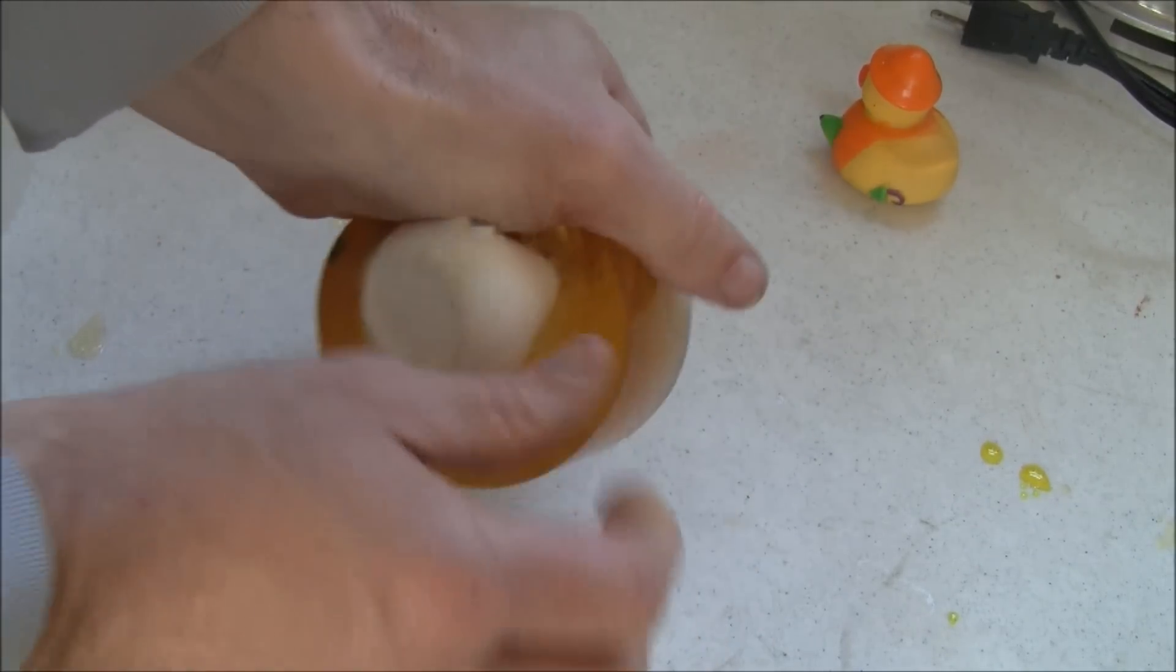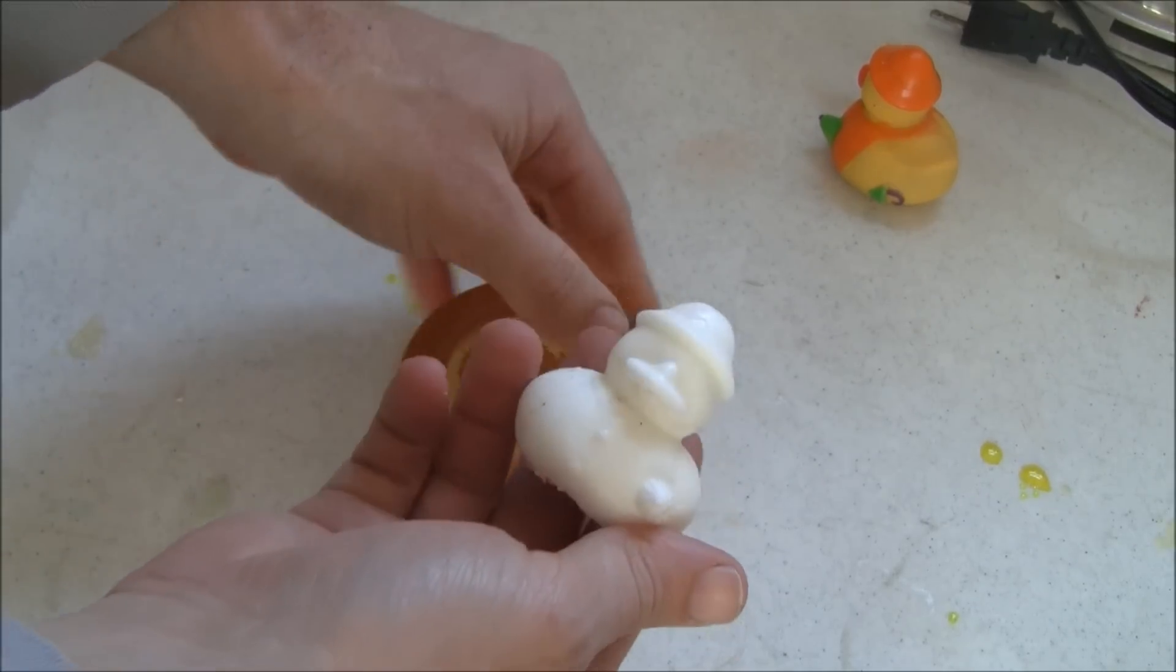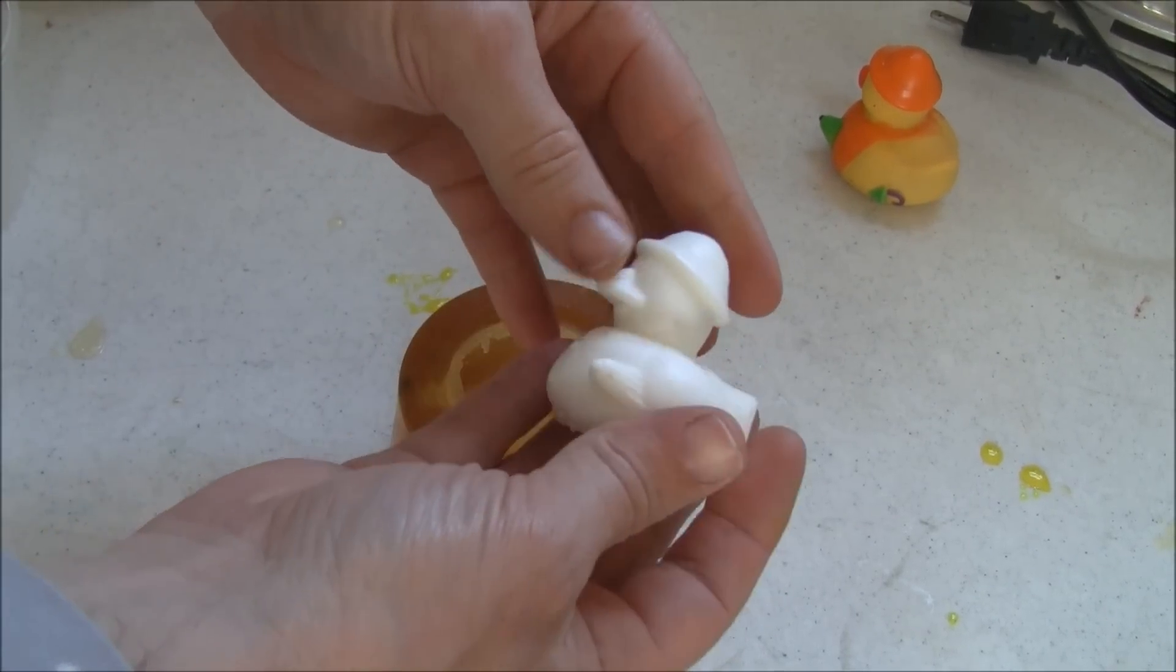At this time, the duck is made. You can remelt the ComposiMold to make a new mold or you can make another casting with the ComposiMold mold.